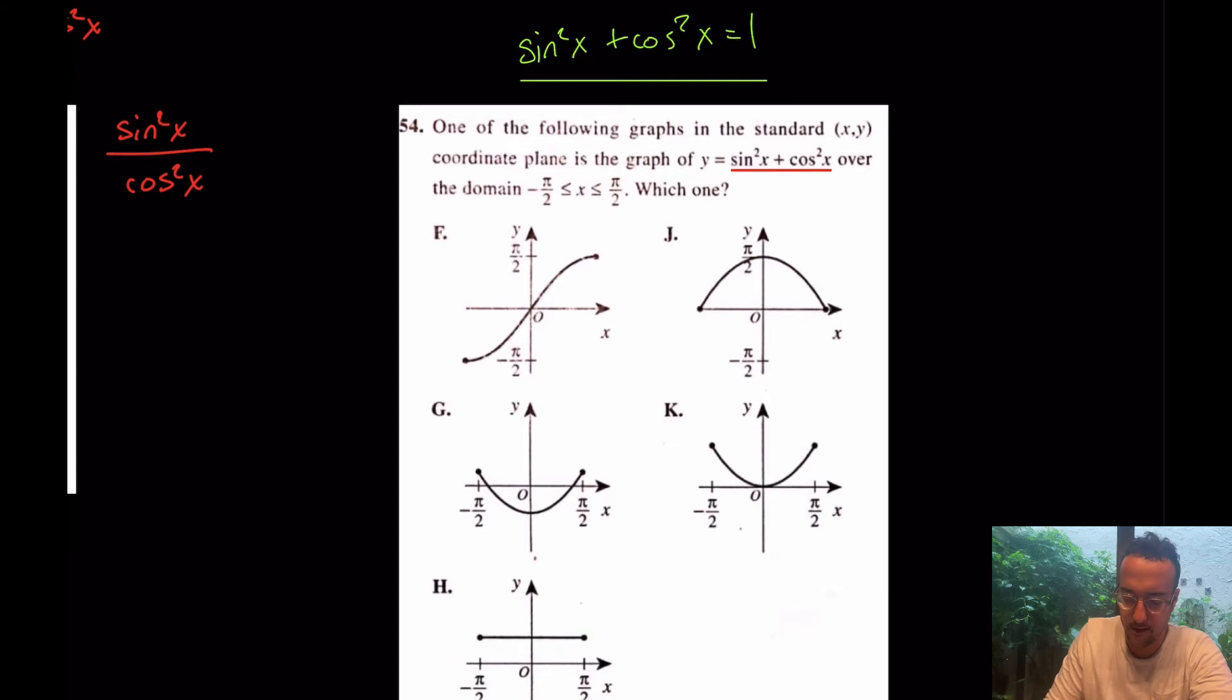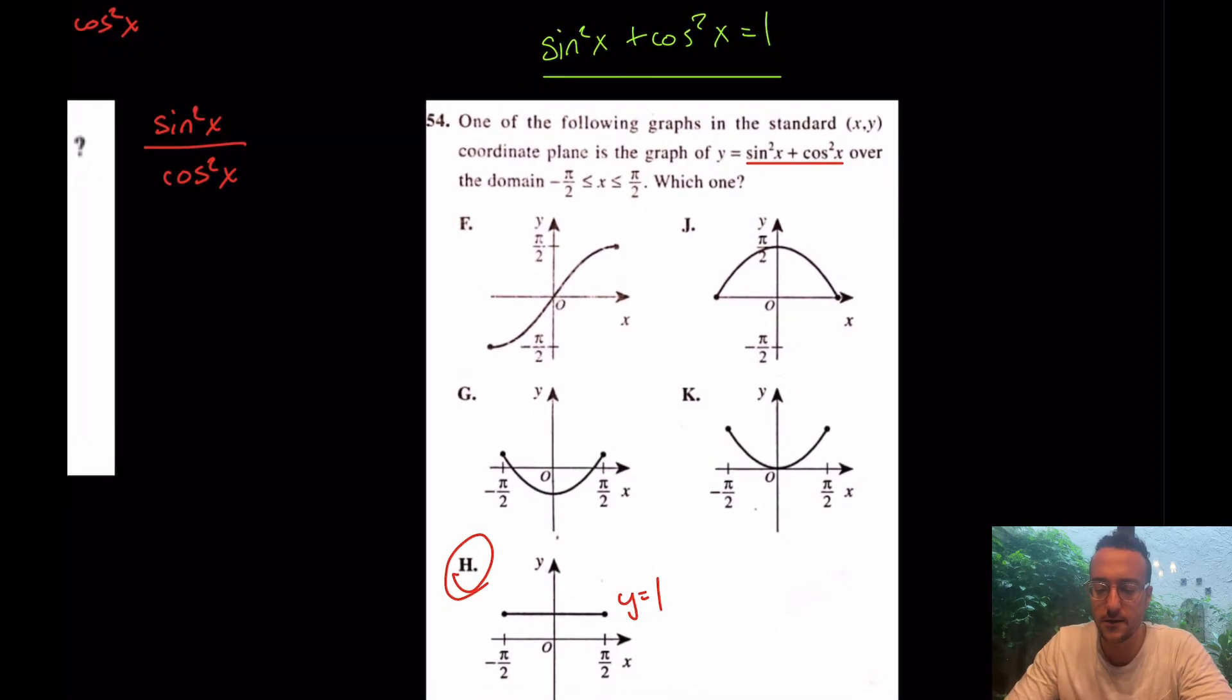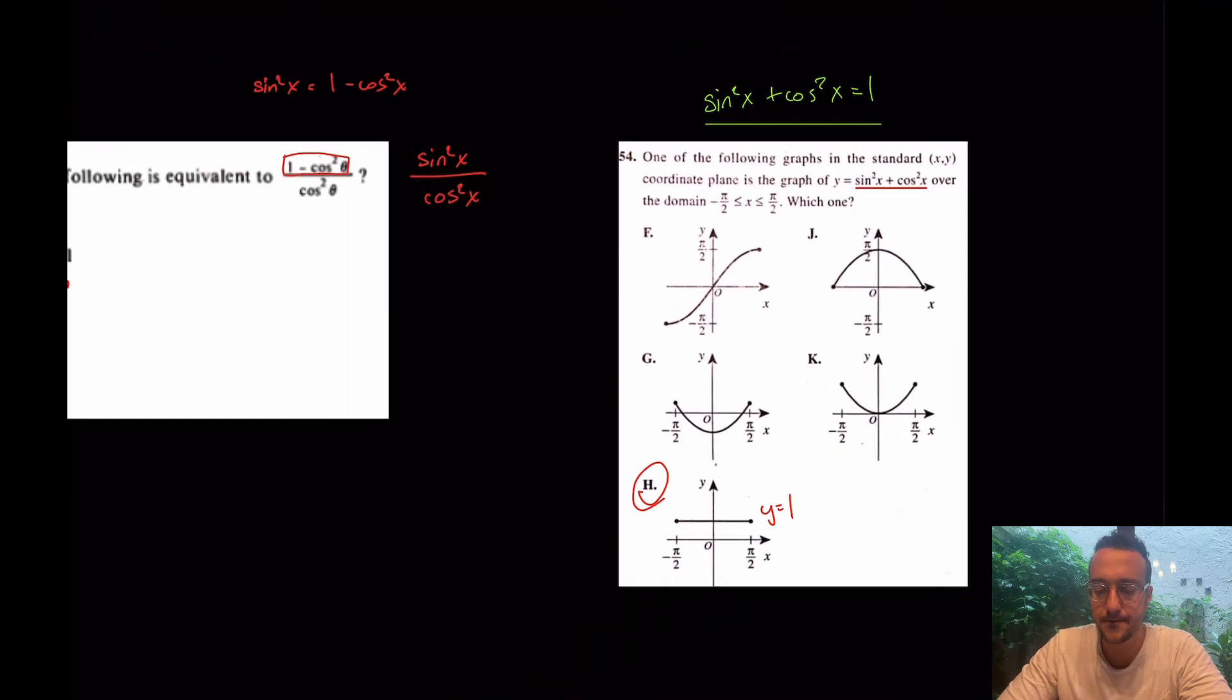Oh, y equals one. It's just a horizontal line. Really, again, y equals one is a horizontal line. That's the only answer choice that really makes any sense. It's h. That's a number 54, really the sixth or seventh hardest question on the test, and we just crushed it in seconds. Good.